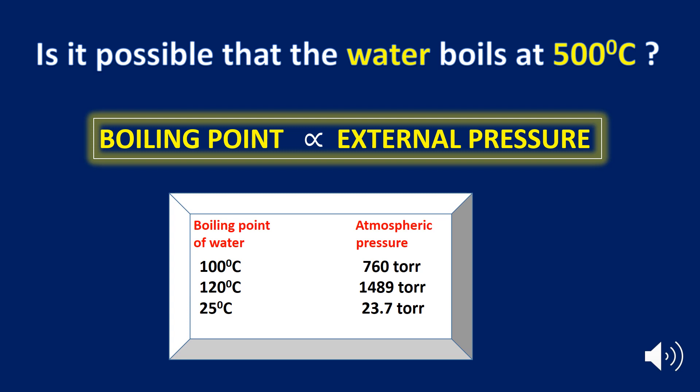The boiling point of water is 100°C at an atmospheric pressure of 760 torr. With an increase in atmospheric pressure, the boiling point increases — as you can see, 120°C is the boiling point of water at 1489 torr. With a decrease in atmospheric pressure, the boiling point decreases — for example, the boiling point of water is 25°C at an atmospheric pressure of 23.7 torr.